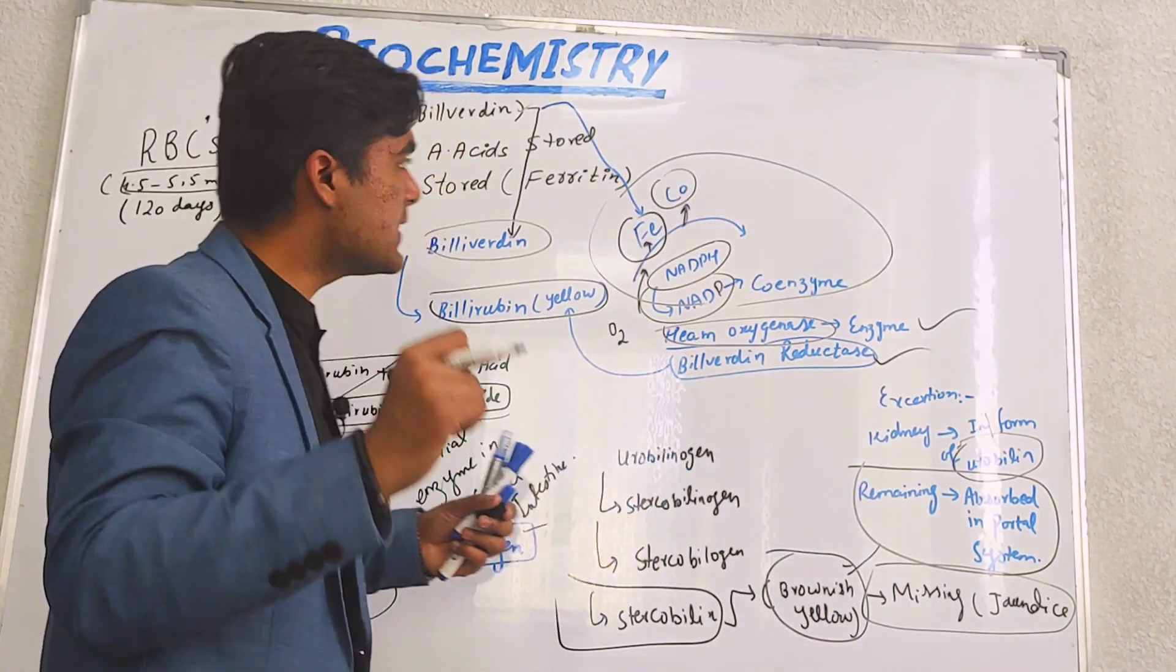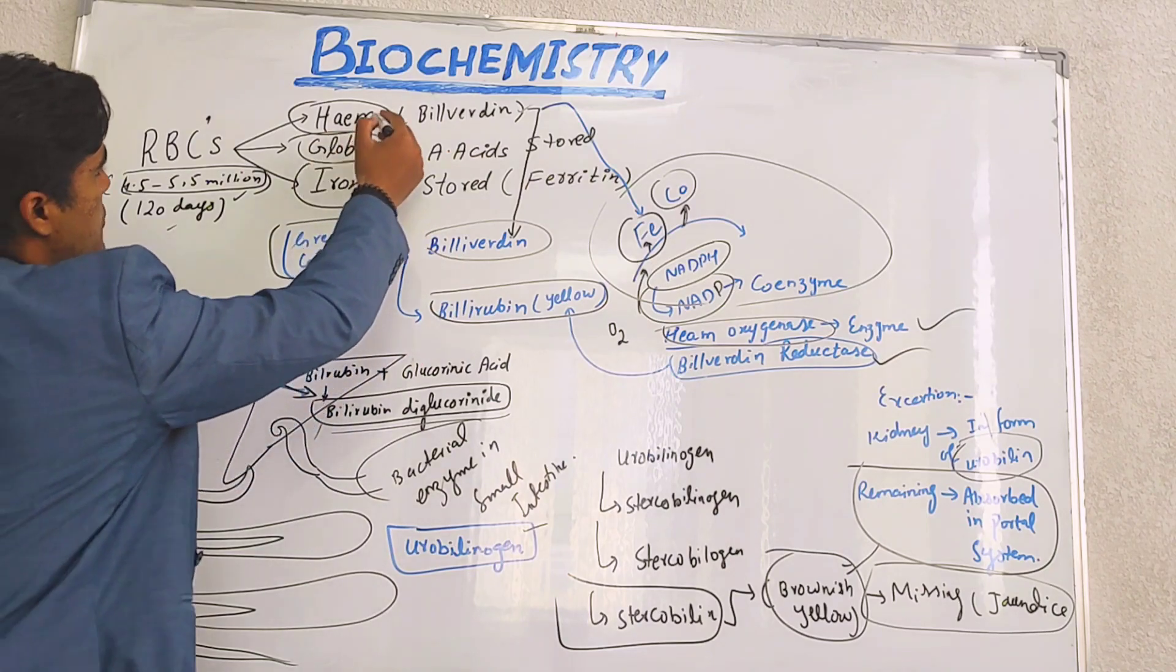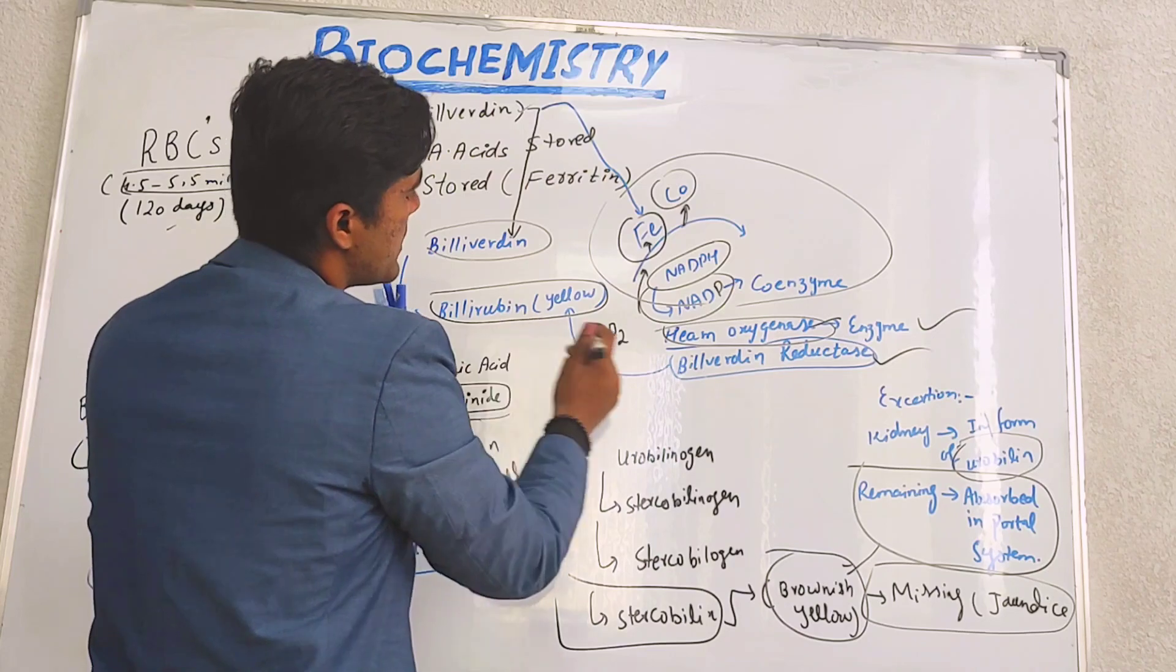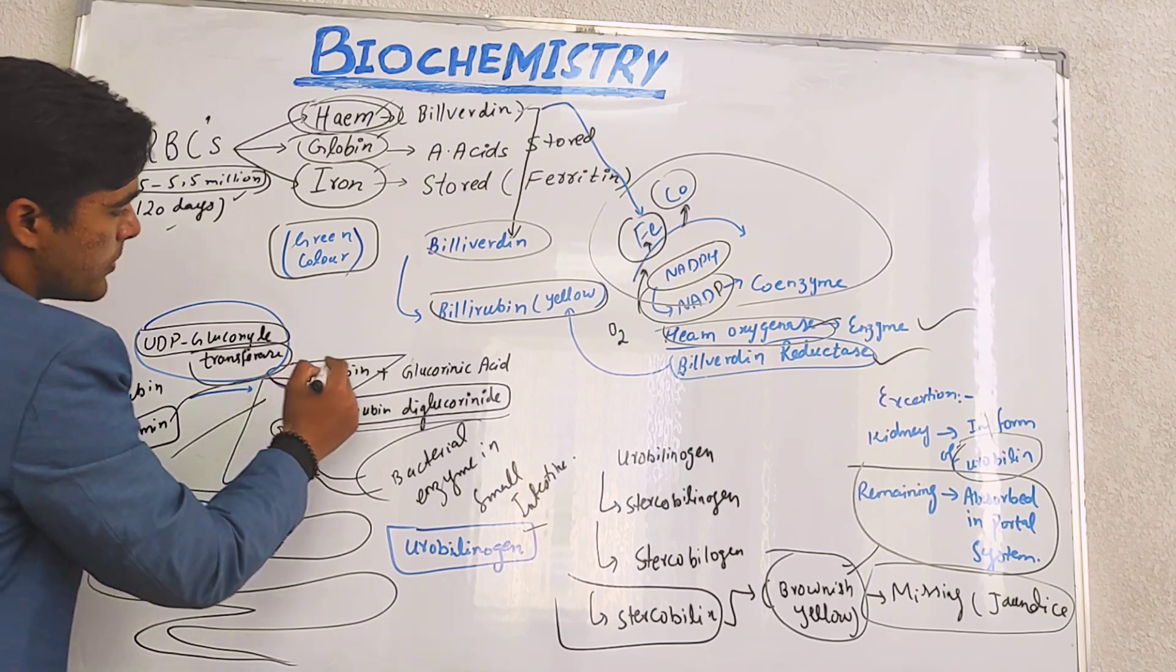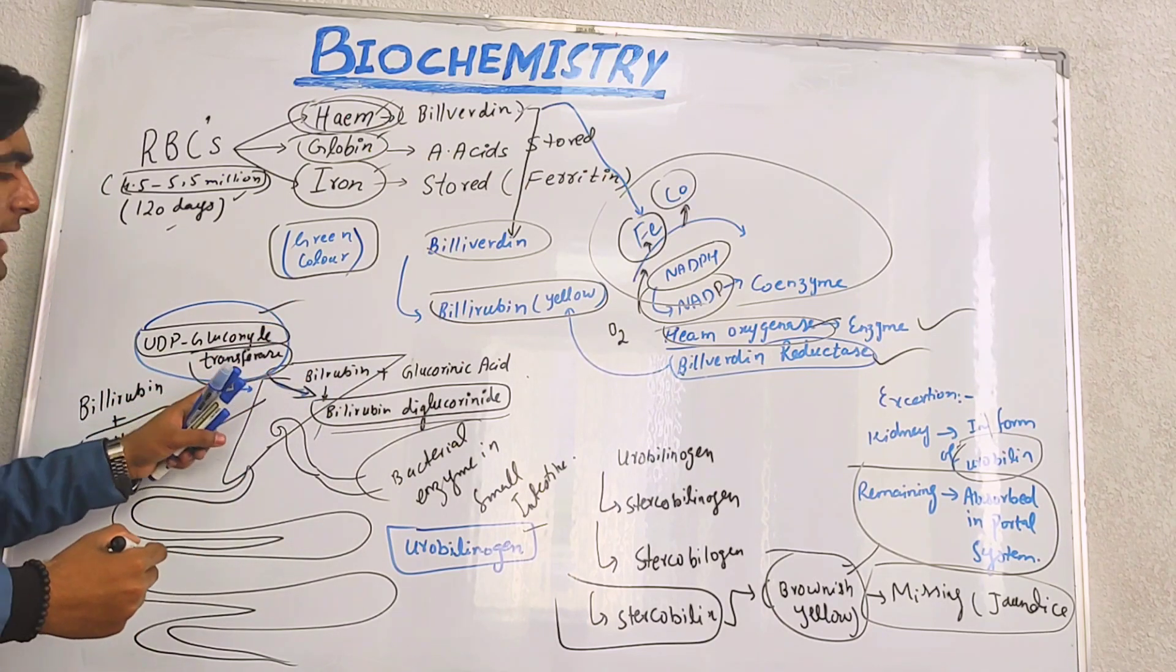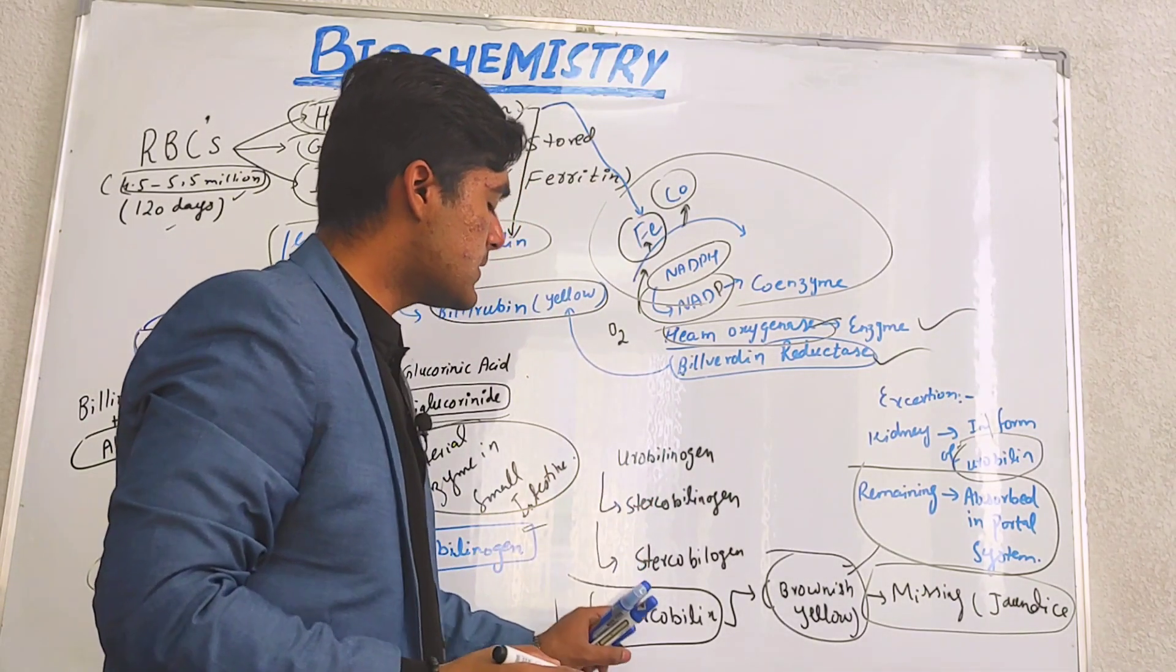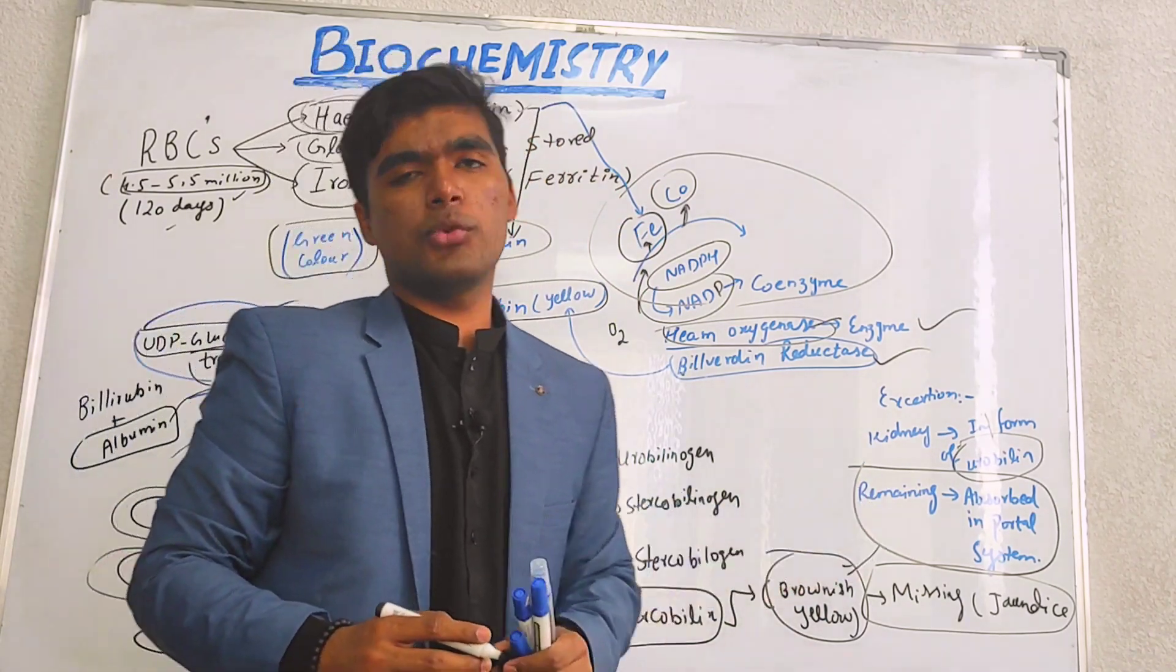In quick summary, we discussed RBCs, their lifespan, their numbers, and their division into heme, globin, and iron. Then conversion of heme into biliverdin in the presence of heme oxygenase, then biliverdin into bilirubin in the presence of bilirubin reductase, then bilirubin with glucuronic acid into bilirubin diglucuronide in the presence of UDP glucuronide transferase. In the small intestine with bacterial enzymes it converts into urobilinogen, then stercobilinogen, and in feces it's converted into stercobilin. Excretion is in the form of urobilin and the remaining bilirubin is absorbed in the portal system.